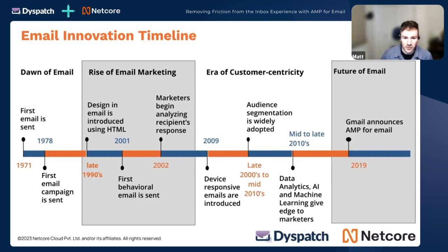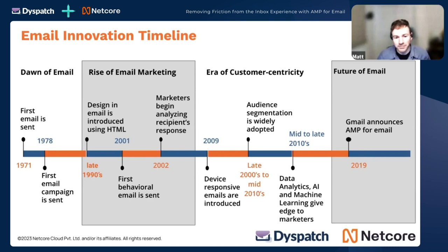AMP is definitely a game changer. The announcement from Gmail for AMP was in 2019, and it's now 2023 — so what's changed between now and then? That's an interesting question we're going to talk about.